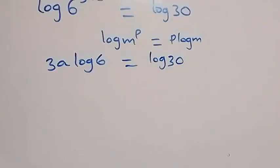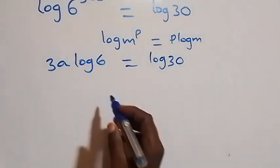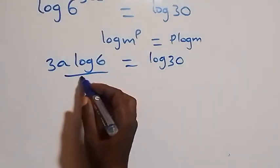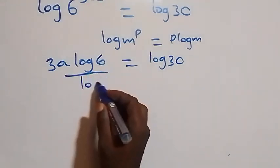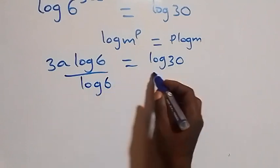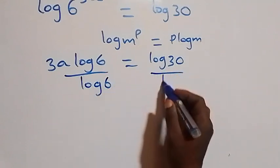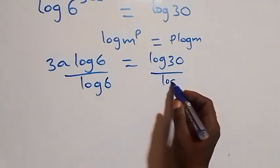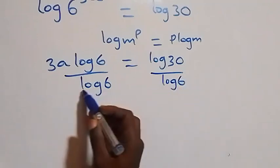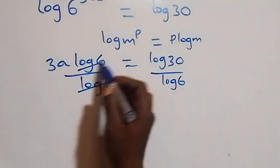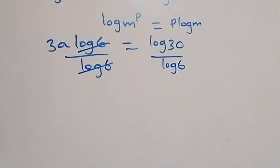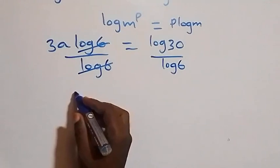Next, we divide both sides by log(6). Log(6) cancels on the left side, giving us 3a = log(30) / log(6).